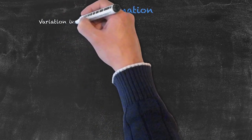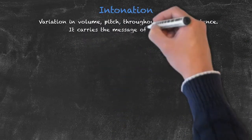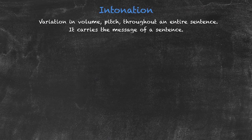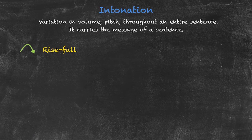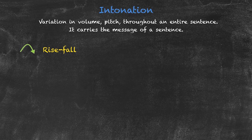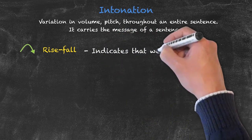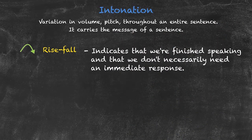Whereas stress is typically concerned with one individual word, intonation is generally concerned with the variation in volume and pitch throughout an entire sentence. Intonation carries the message of a sentence — it's particularly important when questioning, agreeing, disagreeing, confirming statements, and expressing emotions. The normal pattern for intonation is the rise-fall. A few examples would be 'I haven't seen him for a week,' or a simple word like 'okay.' With the falling intonation, we're indicating that we're finished speaking. Other examples: 'I'll see you at six then,' or an information question like 'How do you spell rough?' — straightforward statements indicating we're finished speaking.